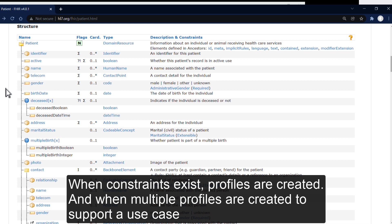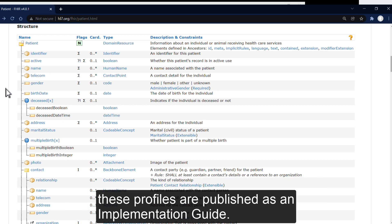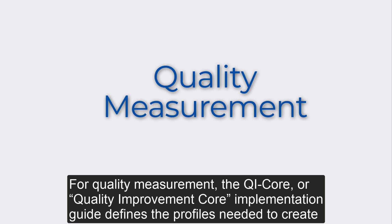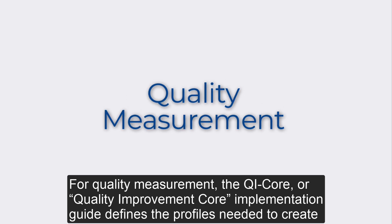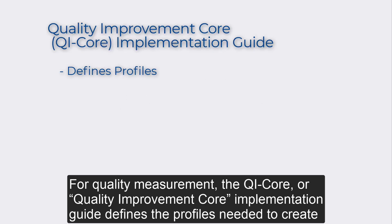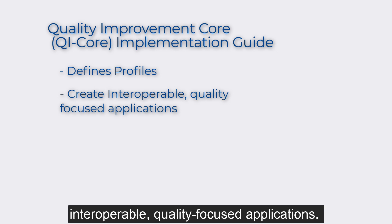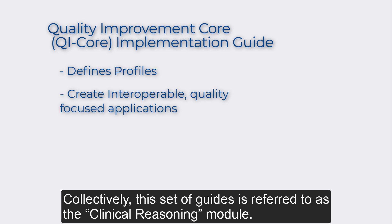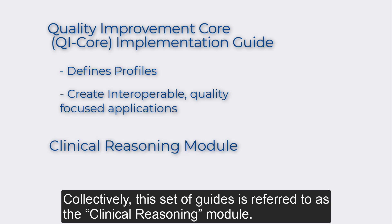When constraints exist, profiles are created. And when multiple profiles are created to support a use case, these profiles are published as an implementation guide. For quality measurement, the QI Core — or Quality Improvement Core — implementation guide defines the profiles needed to create interoperable quality-focused applications. QI Core is just one of several implementation guides that support quality measurement. Collectively, this set of guides is referred to as the clinical reasoning module.